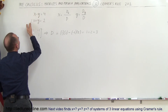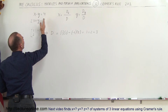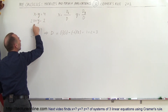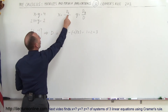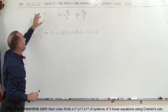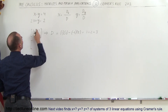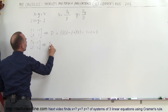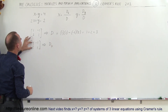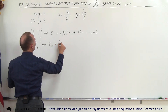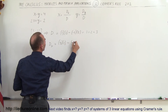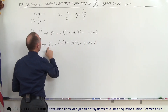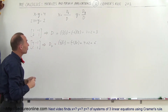To find D sub x, we replace the coefficients of the first column — the x variables — with the two constants on the right side of the equations. So instead of writing 1 and 2, we write 4 and 2, keeping the y coefficients -1 and 1 the same. The determinant is 4 times 1 minus (-1 times 2), which equals 4 plus 2, so D sub x equals 6.